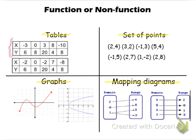We have an x value of -3 paired with 6, x value of 0 paired with 8, x value of 3 paired with 20, x value of 8 paired with 4, and x value of -10 paired with 8. Notice that every single one of my x values is different, so every single x value is paired with only one y.